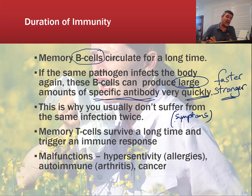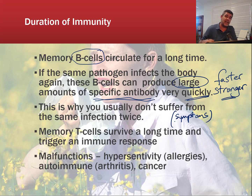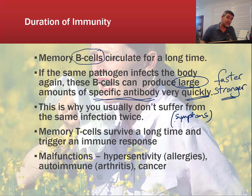Memory T cells survive for a long time as well, and they're part of triggering that whole team-based immune response. T cells differentiate into T helper cells, killer or cytotoxic T cells, suppressor T cells, as well as memory cells. There's cloning, specialization, and certain chemicals released that trigger additional and supportive responses from the whole immune system.